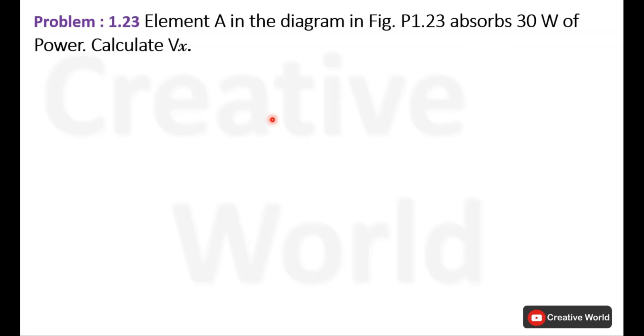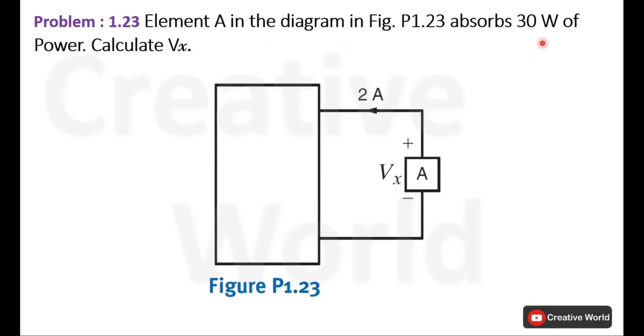Read the scenario. Element A in the diagram in figure P1.23 absorbs 30 watts of power. Calculate Vx. Vx is across this element. This element is absorbing power. Here one key point is mentioned: absorbing power of 30 watts, and the current direction is also indicated with its magnitude.